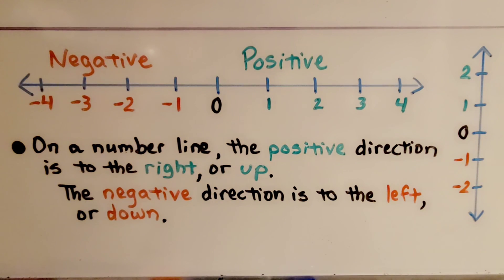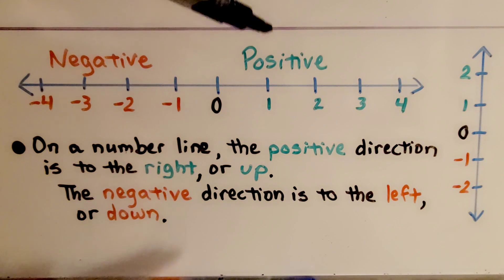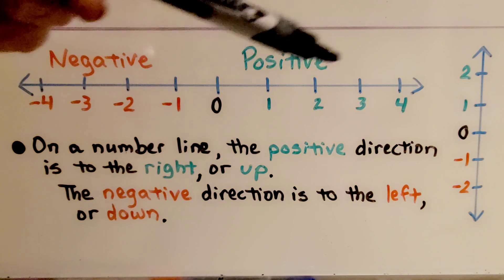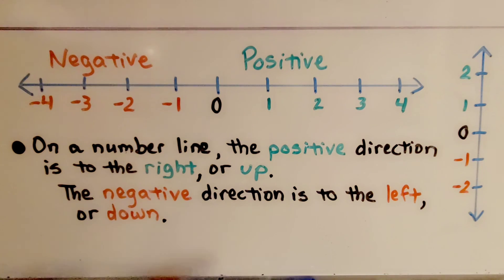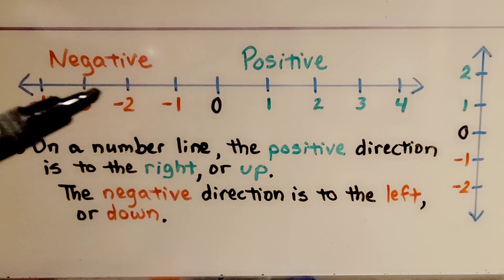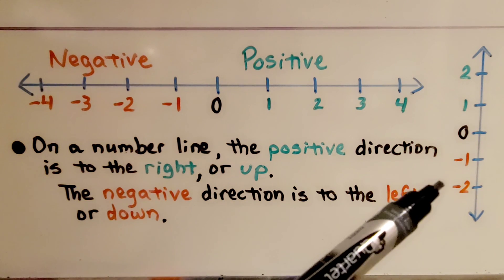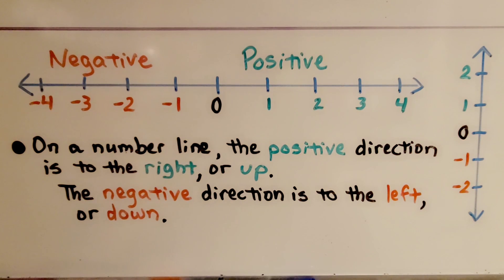On a number line, the positive direction is to the right, or up if it's a vertical number line. The negative direction is to the left, or down if it's a vertical number line.